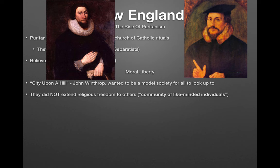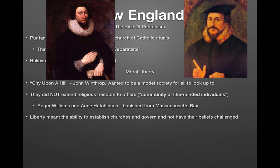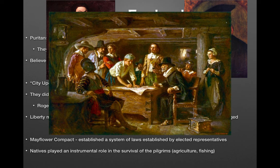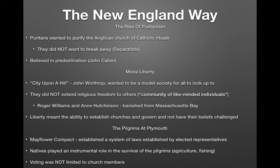Roger Williams and Anne Hutchinson challenged Puritan ideals and were banished from Massachusetts Bay to Rhode Island. For Puritans, liberty meant the ability to establish churches, govern, and not have their beliefs challenged. The Mayflower Compact established a system of laws by elected representatives — another early form of democracy. Natives played an instrumental role in the survival of the Pilgrims, teaching them how to farm and fish. At Plymouth, voting was not limited to church members.